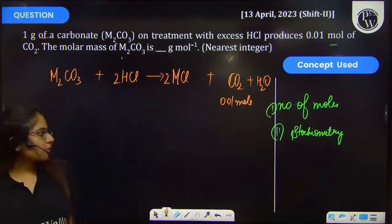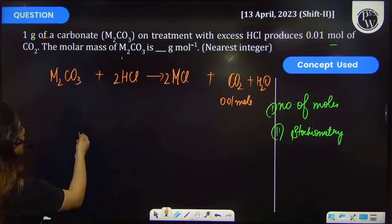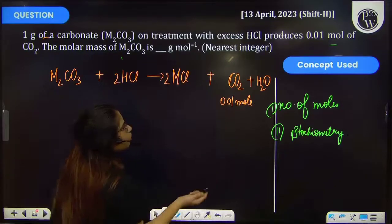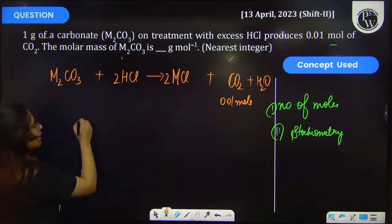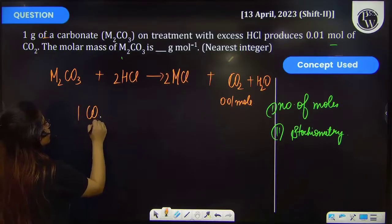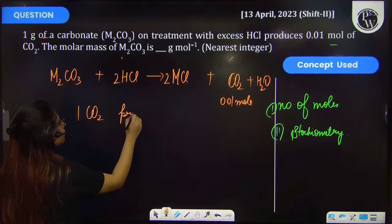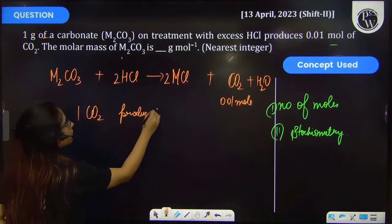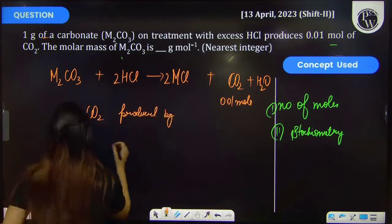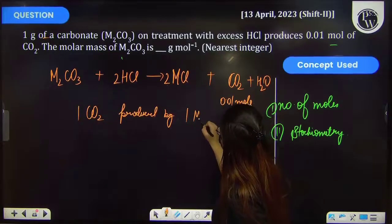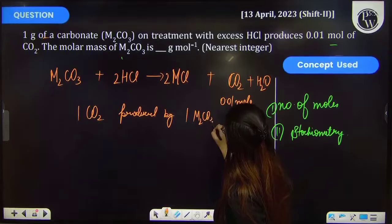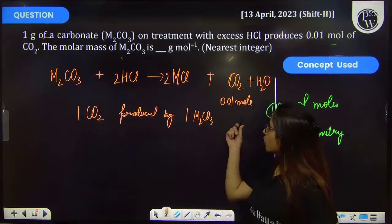Now from stoichiometry you can say that if it has 0.01 mols which are formed, then it will be enough because 1 mol of CO₂ is produced by 1 mol of M₂CO₃, right? So 0.01 mol